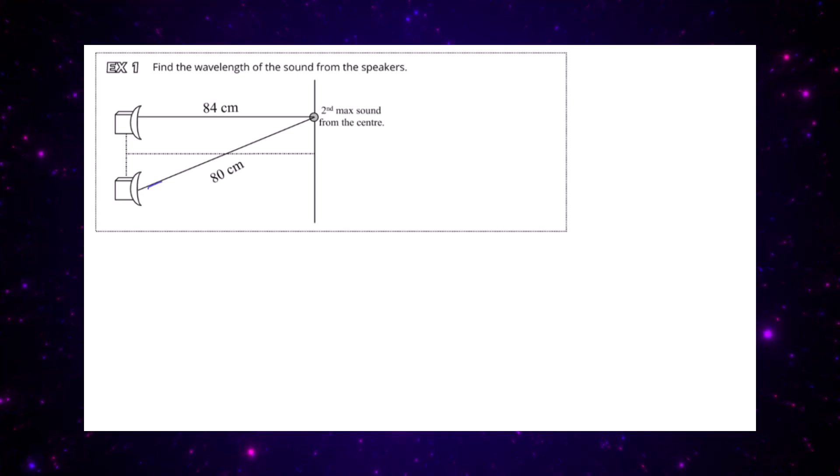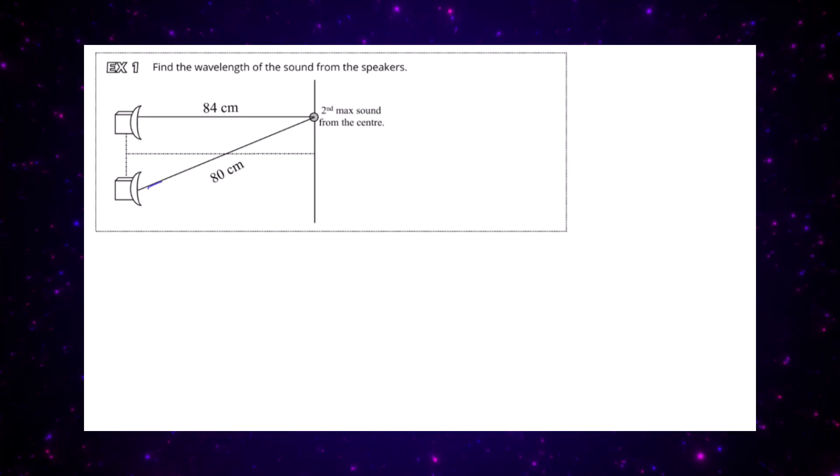Find the wavelength of the sound from the speakers. Two coherent speakers, and we have a second maximum sound from the centre. And that's the measurements.